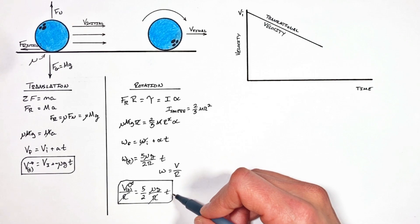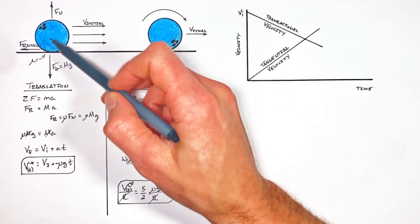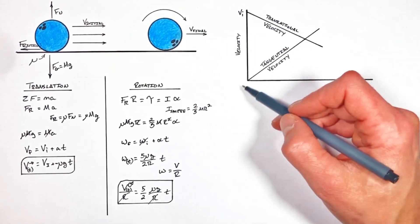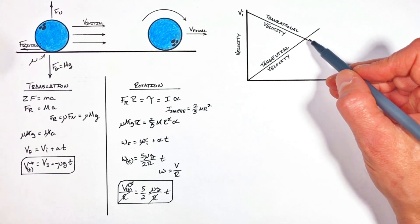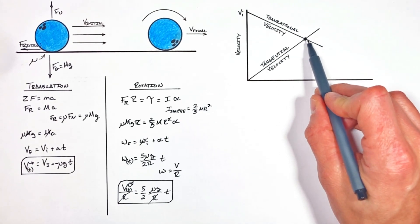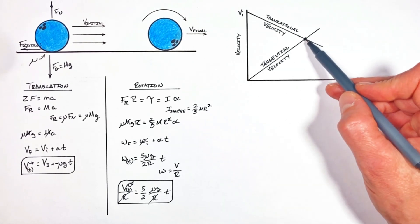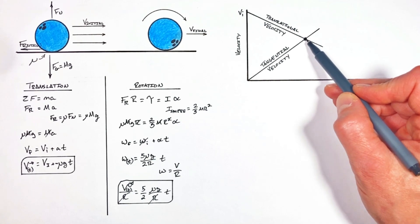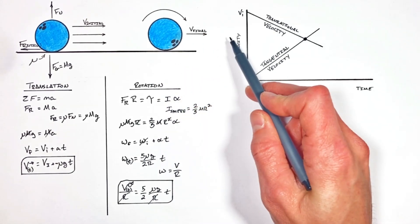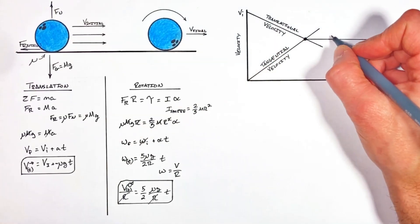Graphing the tangential velocity of the edge of the ball, we see that at first the ball isn't rotating, so it has no tangential velocity. But as time goes on and friction causes the ball to rotate faster and faster, the tangential velocity increases. The critical point in the entire problem is where the two curves intersect on the graph: the translational velocity has decreased and the tangential velocity has increased until they have the same value. That is the point where the ball is finally rolling without slipping — and after that point, the ball just cruises along at a constant final velocity.